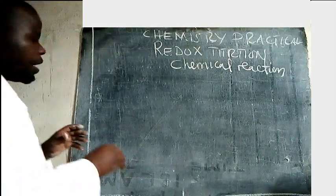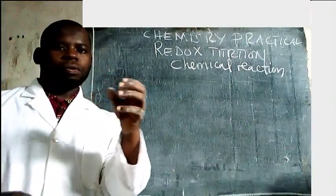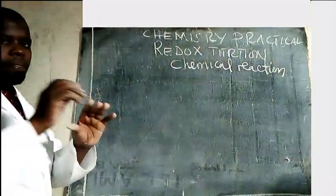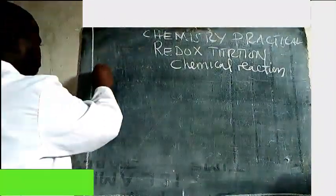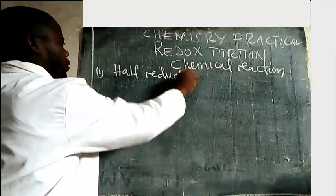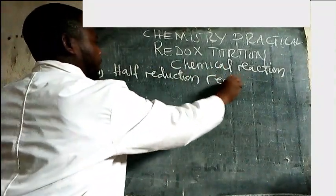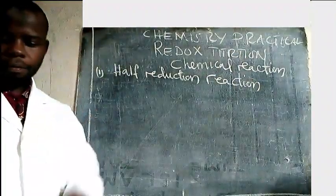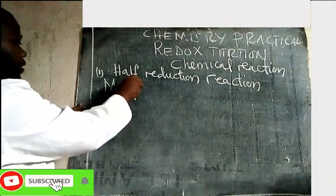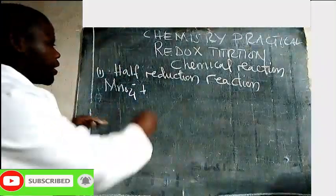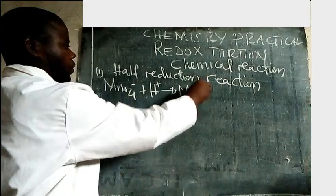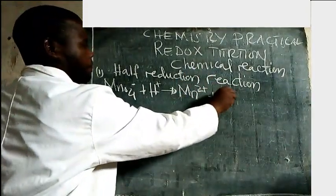The half reaction: the sulfuric acid creates an acidic medium for the permanganate. We have the half reduction reaction and the half oxidation reaction. Let us begin with the half reduction reaction for permanganate in acidic medium.